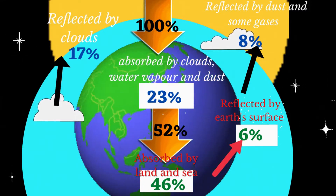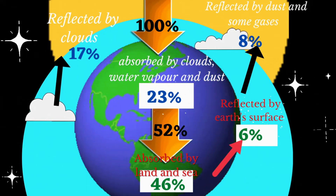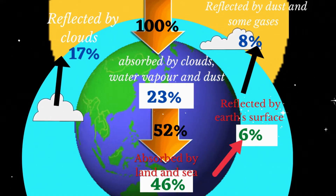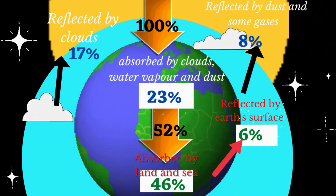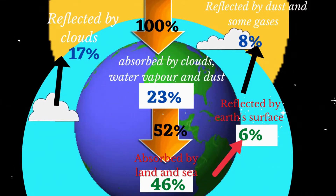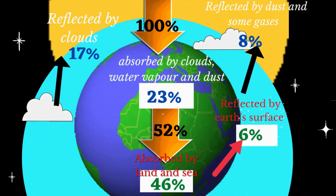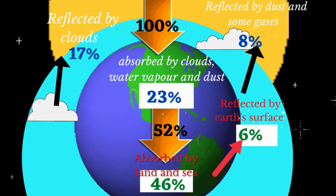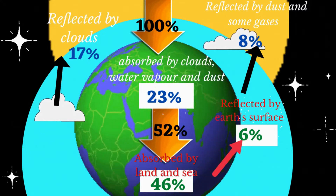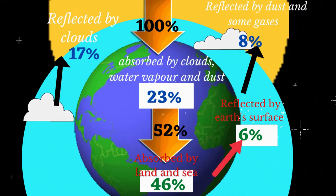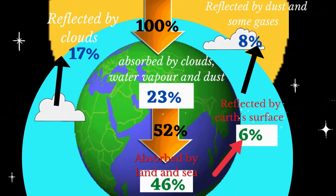Absorption, reflection, and scattering result in some of the incoming solar radiation being lost. The rest reaches the surface either directly or as diffused radiation. On reaching the surface, some of the radiation is absorbed while the rest is reflected.